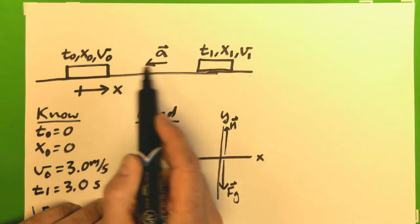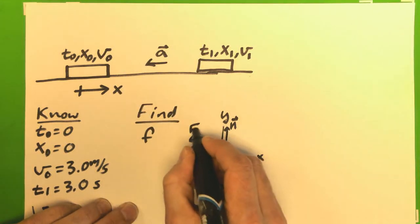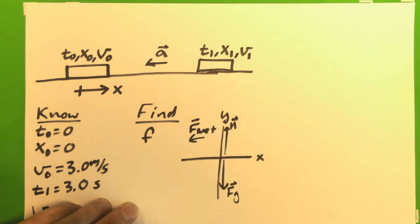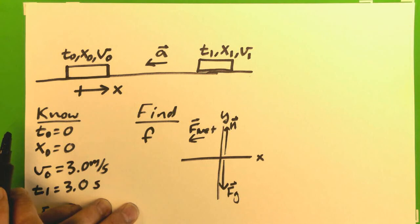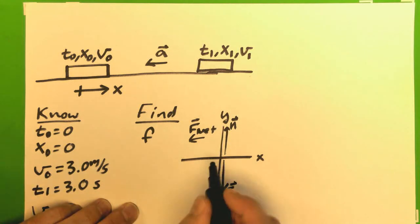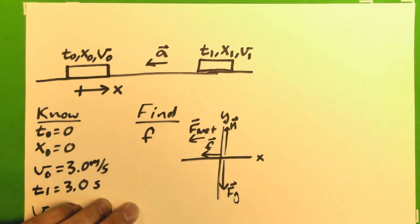I know the acceleration is to the left, which means my net force must be to the left, because the net force always points in the direction of the acceleration, which means my frictional force, the only other force I have, must be pointing to the left. I'll give it that subscript, or that label, lowercase f.